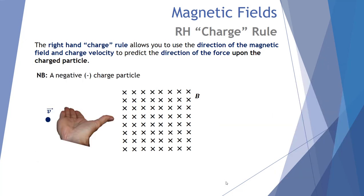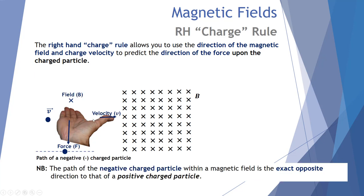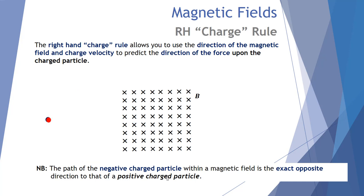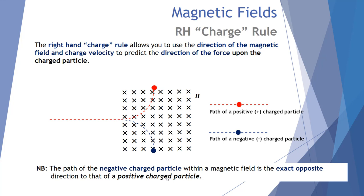For a negative charged particle, the effect is reversed. With field into the page and velocity to the right, the right hand rule predicts upward for a positive charge — so a negative charge bends downward. The path of a negative charged particle is the exact opposite direction to that of a positively charged particle. If the magnetic field lines were reversed — pointing out of the page — both paths would also be reversed.